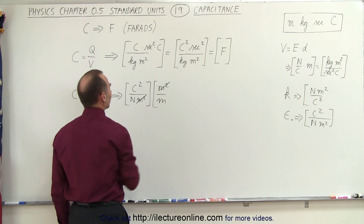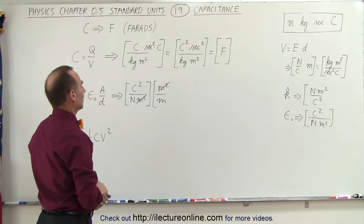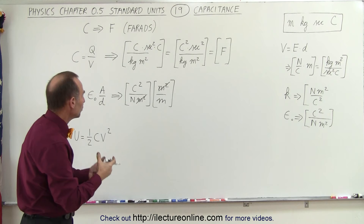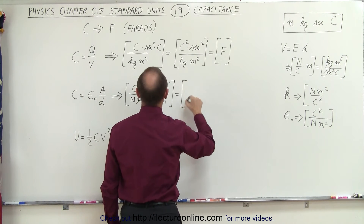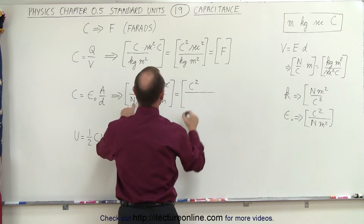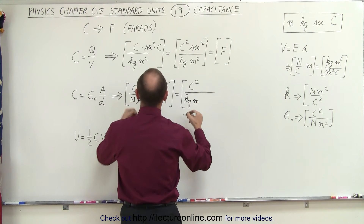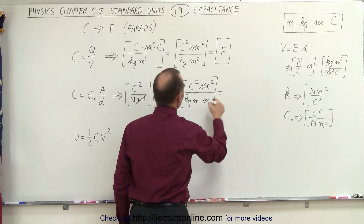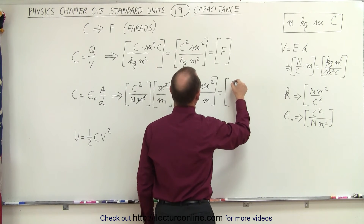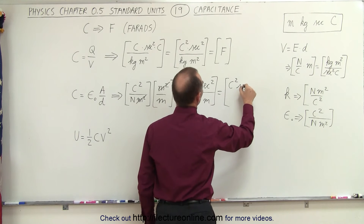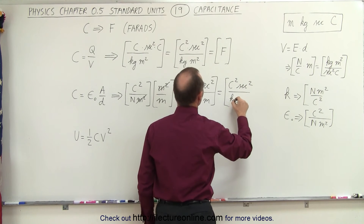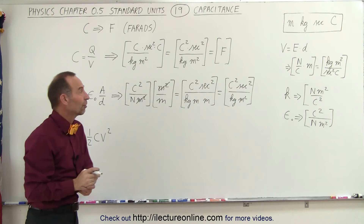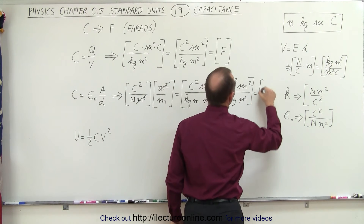The meters squared from area cancels with one meter from distance. We still have newtons in the denominator, so we convert newtons to kilograms times meters per second squared, which puts seconds squared in the numerator. Bringing everything together we get coulombs squared times seconds squared divided by kilograms times meters squared — exactly the same result as before. So both definitions give the same standard units of capacitance, which equals one Farad.